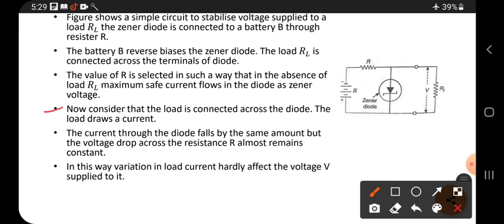Now consider that the load is connected across the diode. The load draws a current. When we connect here, suppose there is no connection, then maximum current passes through the diode. If a load is connected, then load can allow a current also through it. The current divides at this point, and a part of current is flowing through the diode and a part of current flows through the RL.